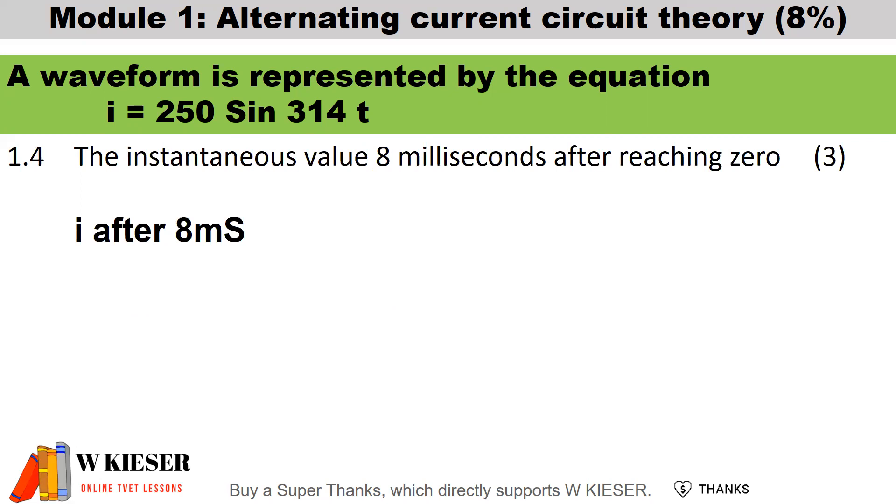Now, to calculate the instantaneous value after 8 milliseconds. We substitute everything into our equation. The instantaneous value is 250, which is our maximum current, multiplied by sine. Inside the bracket, we can either say 2 times pi times frequency, or we can substitute the radians of 314, multiplied by 0.008 amps. And then to convert radians to degrees, we multiply by 57.3. Therefore, the instantaneous value after 8 milliseconds is 117.733 amps.